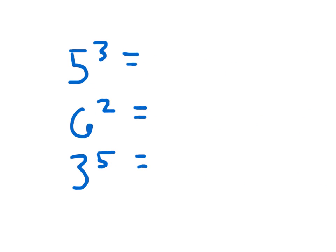I'm going to give you some more terminology, some more vocabulary. What we call this right here is our base, and what we call this right here is our exponent. This is our base, and this is our exponent. This 5 right here is our base, and this 3 is our exponent. And so what this means is that we're taking this base and multiplying it together this many times — that's where our exponent comes into play.